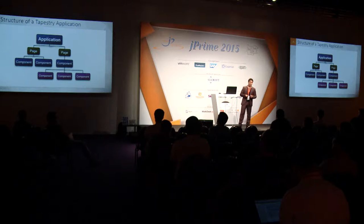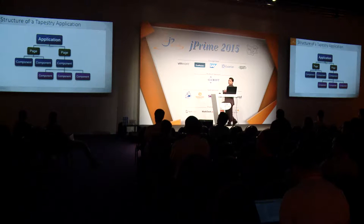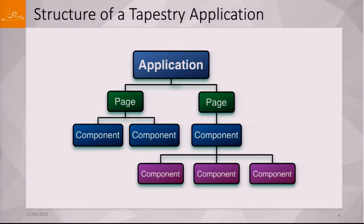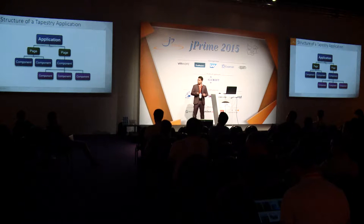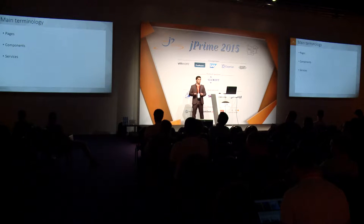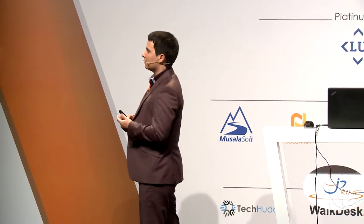The Tapestry application is made by pages which consist of components, which consist of other components and so on. So everything is really modular and pluggable — that's why it's scalable. The main objects you should have in mind for now are pages, components, and services. Services are basically the places where we store our business logic.